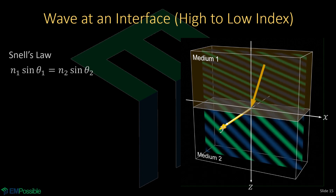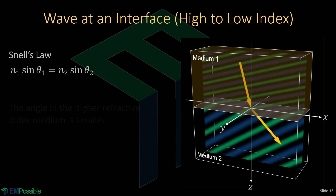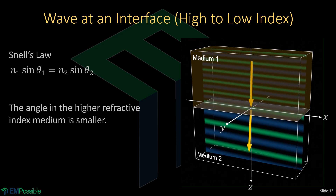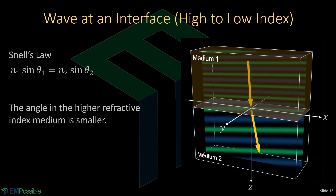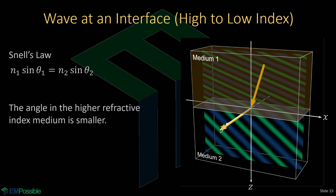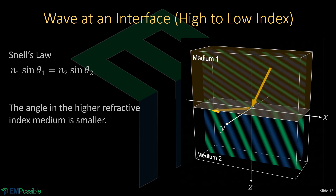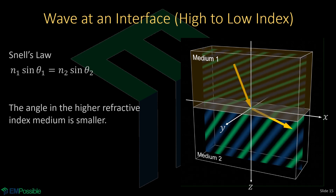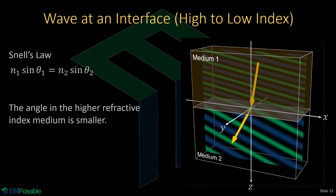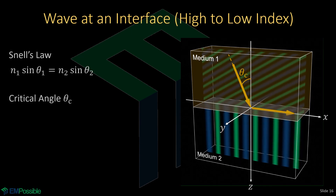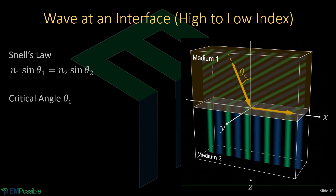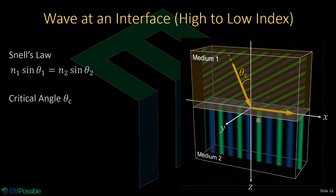We have the same conclusion: the medium with the higher refractive index has the smaller angles, and the medium with the lower refractive index has the larger angles. We notice something interesting — letting the wave in medium two go over the full range from negative 90 to positive 90 degrees, the wave in medium one only sweeps back and forth in a rather narrow cone of angles. What happens if the angle of incidence is larger? If we let the angle in medium two be exactly 90 degrees, the angle in medium one is called the critical angle — the angle of incidence where the transmitted angle is exactly 90 degrees.